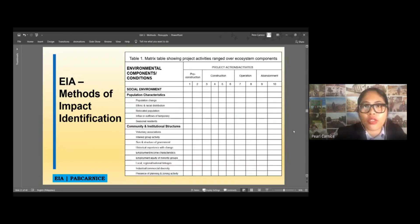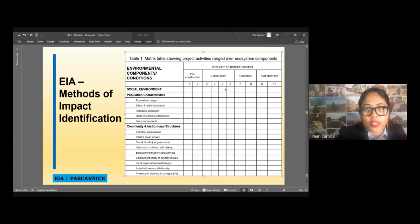And then, of course, we also have social environment. So, for example, population characteristics. Is there a population change? Is there a possible ethnic or racial distribution, relocated population, influx, or outflows of temporal and seasonal residents? We also have community and institutional structures. For example, is there voluntary associations? Will there be an interest group activity, size of structure of the government, and so on and so forth. So, we can identify those as part of the impact of your project on the specific activities or phases of your project.